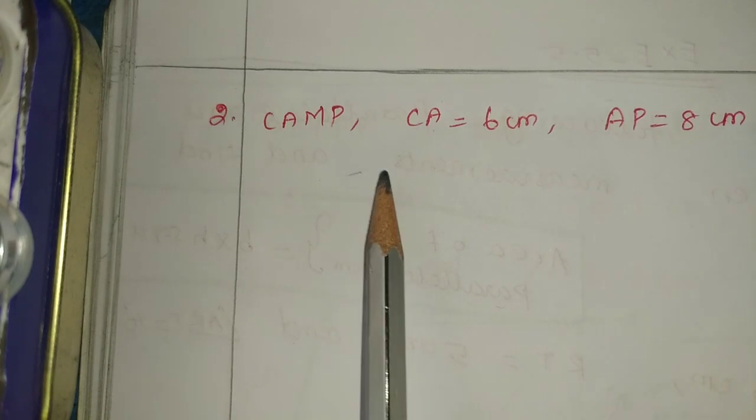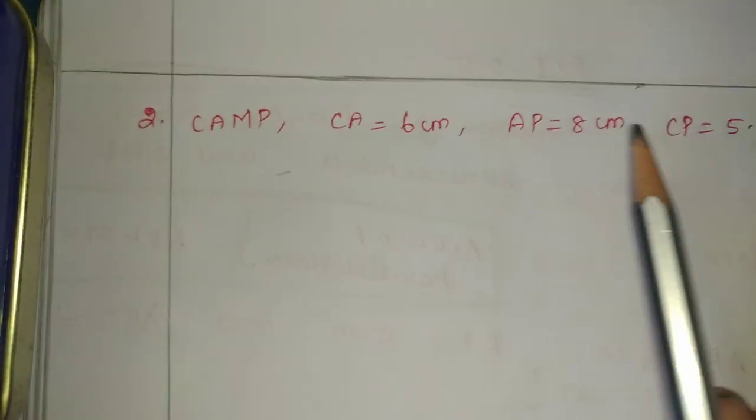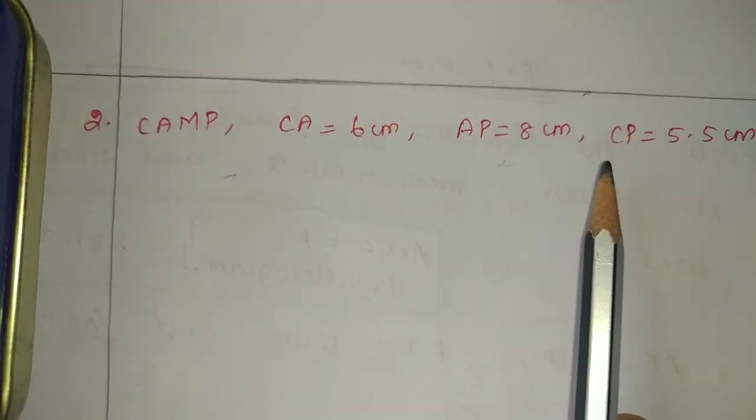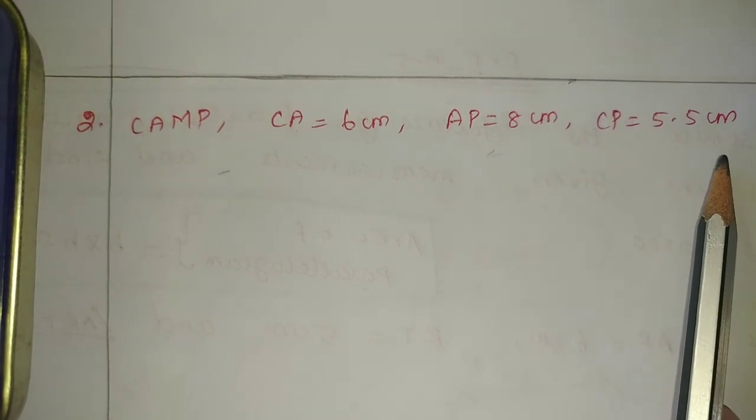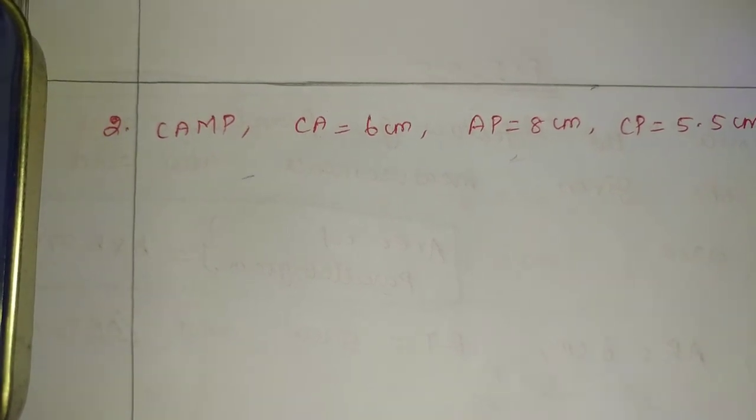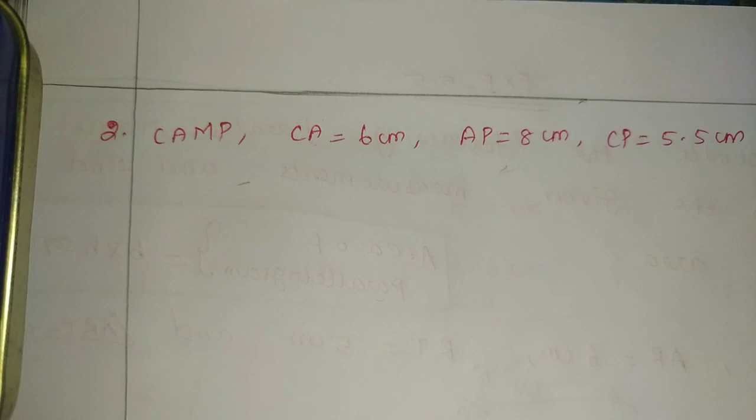CAMP - C-A-M-P. CA equals 6 cm, AP equals 8 cm, CP equals 5.5 cm. Now, rough diagram first, then fair diagram.